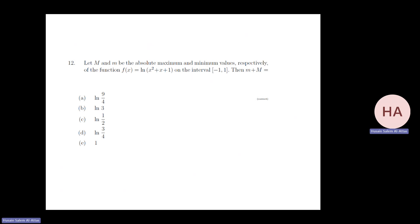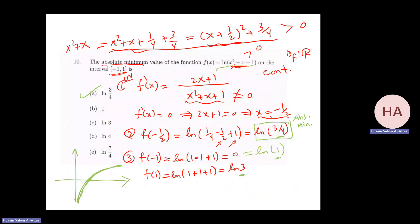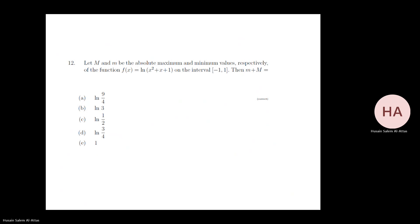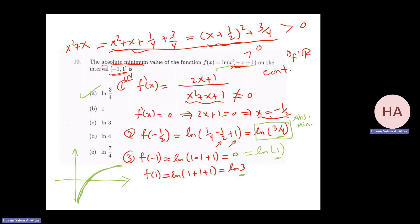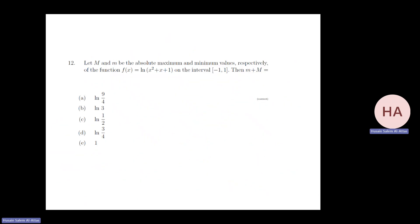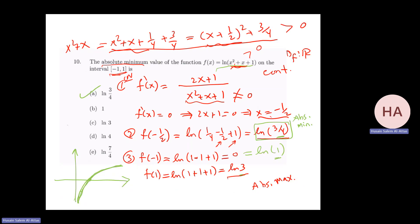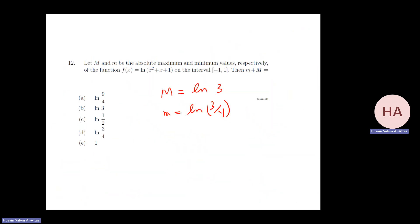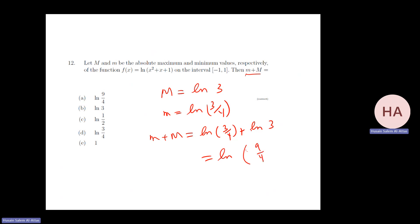We want 8 times capital M plus small m, which is 8 times 2 plus (minus 14) equals 16 minus 14 equals 2. Going back to the logarithm problem, the absolute minimum was ln(3/4) and the absolute maximum is ln(3). The sum of these two is ln(3/4) plus ln(3) equals ln(9/4), or equivalently the product is 3 times 3/4 equals 9/4.